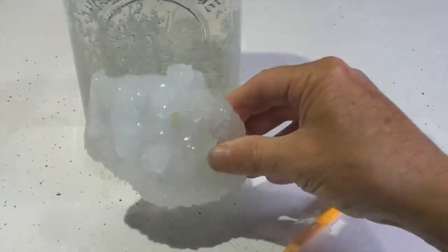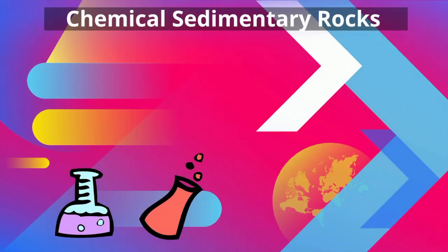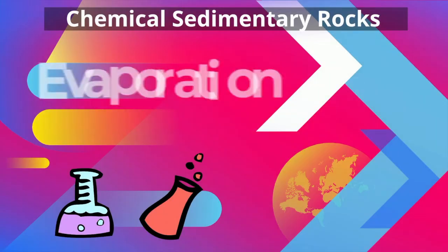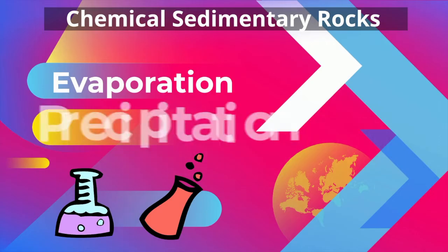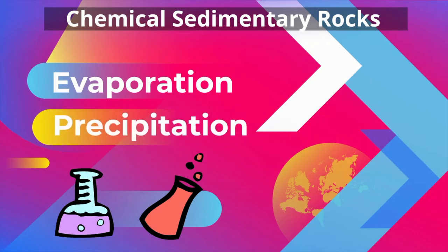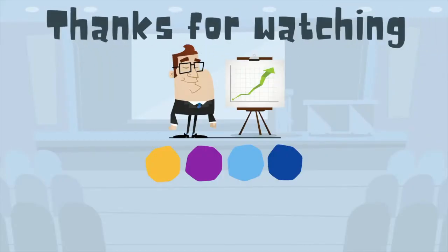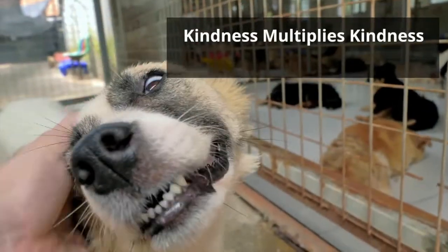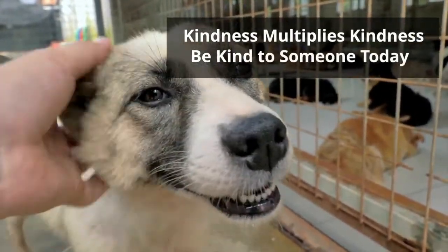In summary, chemical sedimentary rocks are formed by either evaporation of mineral-rich water or precipitation of mineral-rich water. Thanks for watching, and remember: kindness multiplies kindness — be kind to someone today.